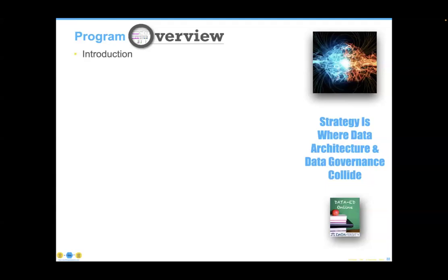Let's review briefly before the Q&A. Data has a lot of confounding characteristics that have made it difficult to explain and to ensure everybody has at least a basic level of data knowledge. I blame college and university curricula soundly for this — we're faced with a zero-sum game, and unless we figure out what's not important to teach anymore, we won't get more data curriculum into courses. Data science programs — most of which are rebranded statistics or operations research programs — don't teach the business value of what they're doing.